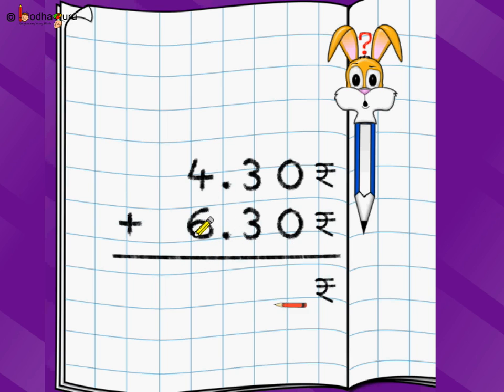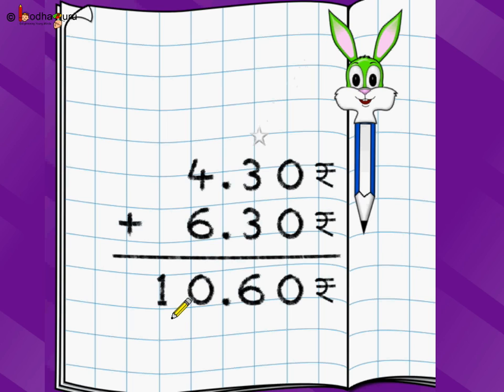So we write 6.30 rupee and now we want to find how many total rupees we have. So what do we do? Just add starting from the rightmost, 0 plus 0 is 0, 3 plus 3 is 6, 6 plus 4 is 10. So we have 10.60 rupees in total, right? Let's take another problem.